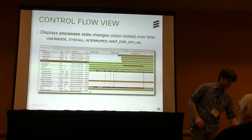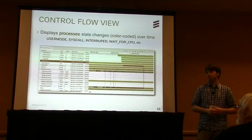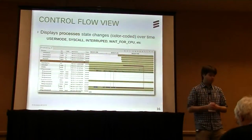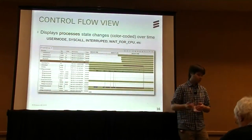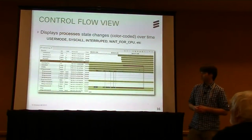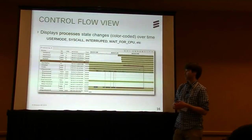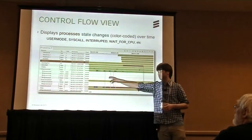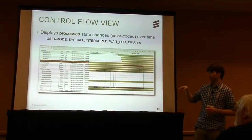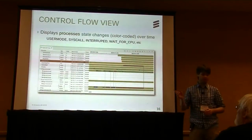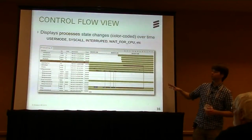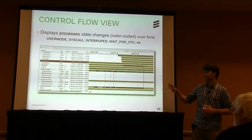One example of a view based on the state system is the control flow view. Using Linux kernel information, it displays all process states over time. Green is user mode, and you can see wait-for-CPU and other states. On the left are the process names, and the little vertical bars show where the CPU is going. You can follow a specific CPU using navigation buttons — go to the next event, zoom in, zoom out. And all of this is part of the framework, so if you want a custom Gantt chart-style view, you get that for free.